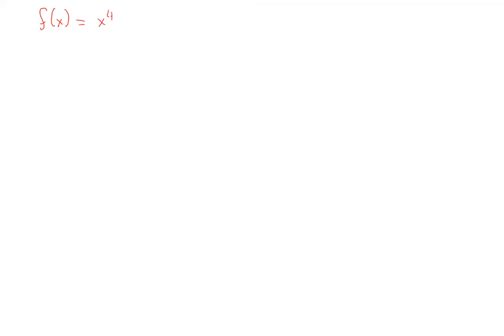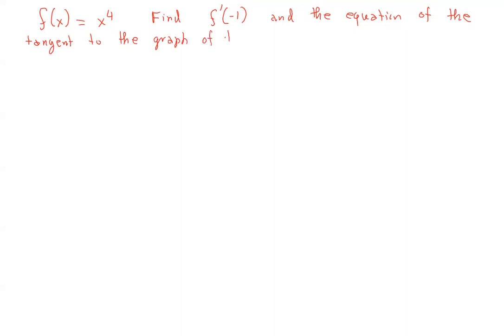Let's do a simple example. Given f(x) = x⁴, find f'(-1) and the equation of the tangent to the graph at the point (-1, 1). Note that f(-1) = (-1)⁴ = 1. Please pause the video and try it using the method we showed.